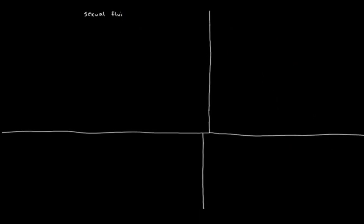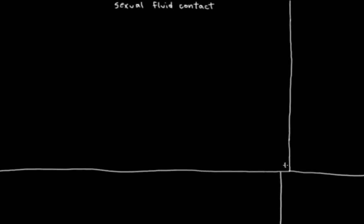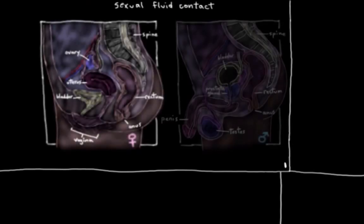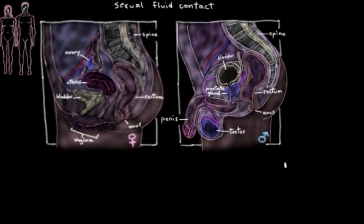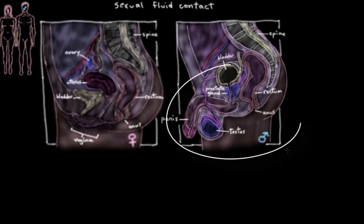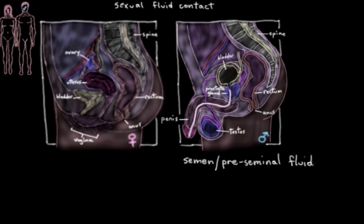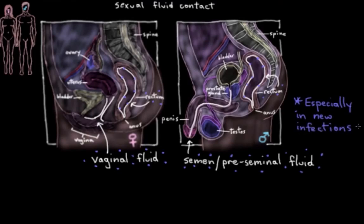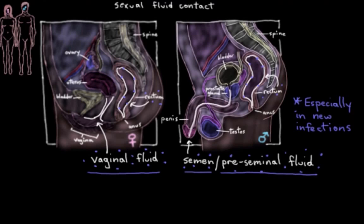Sexual fluid contact is actually the most common way that HIV is spread, typically when having unprotected sexual intercourse with someone who has HIV. Contact with sexual fluids like semen, pre-seminal fluid, vaginal fluid, or even rectal fluid can spread HIV because there's often a fairly high amount of viral particles within these fluids, particularly within the first few weeks of a new HIV infection when the infected person's viral load is at extremely high levels.